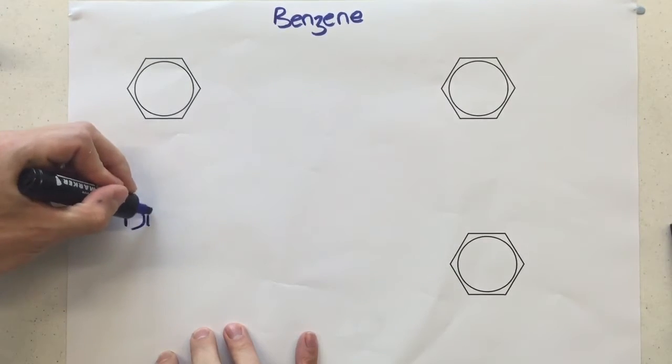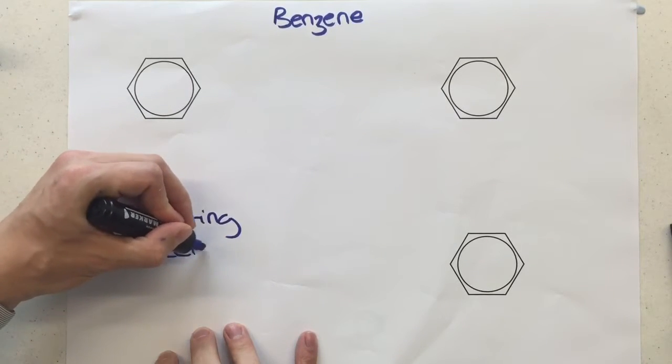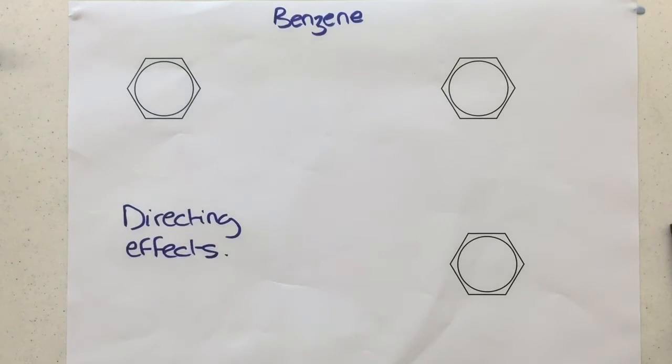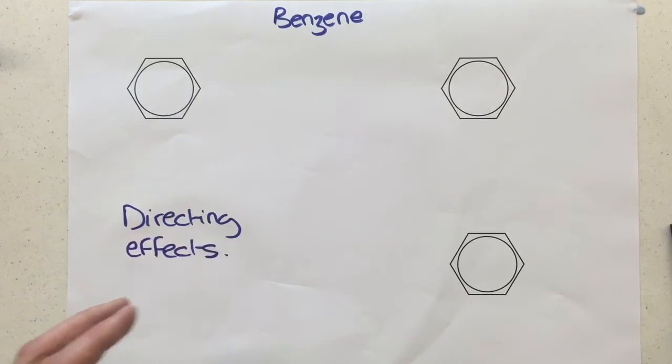So we've got different groups that are bonded to the benzene ring, which has always been on the A-level. Actually now though, new addition to the A-level, they are actually causing for the reactivity of that benzene ring to change. And new groups, if a new group is being substituted on, so it is a substitution reaction still. The directing effects of these groups that are already bonded to the benzene will force the new group being put on to a very particular position.